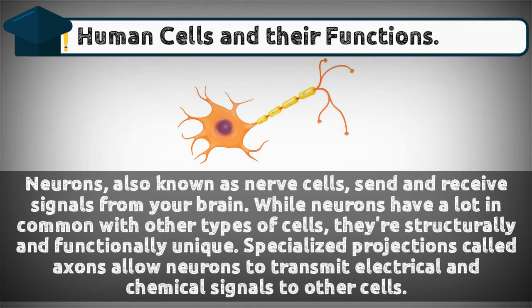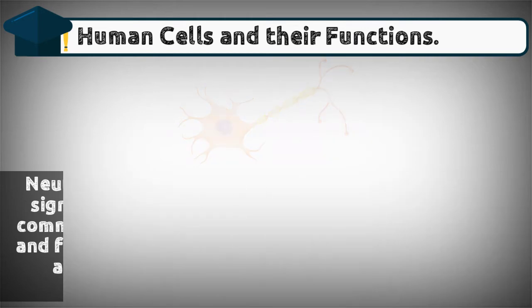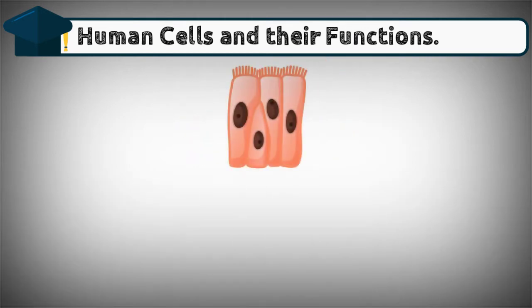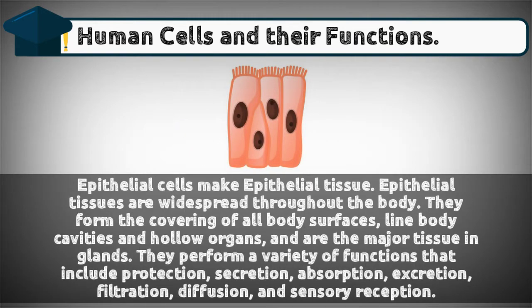Nerve cells — neurons, also known as nerve cells, send and receive signals from your brain. While neurons have a lot in common with other types of cells, they are structurally and functionally unique. Specialized projections called axons allow neurons to transmit electrical and chemical signals to other cells.